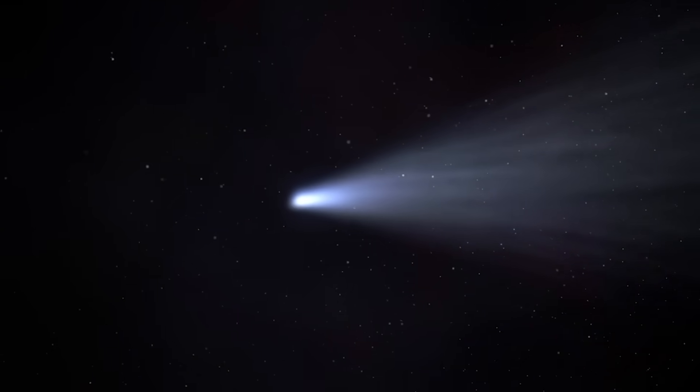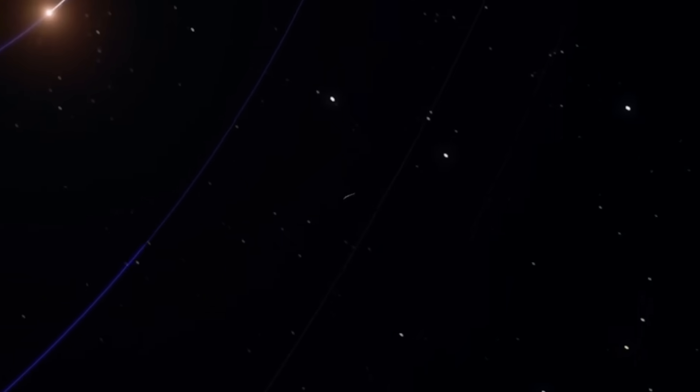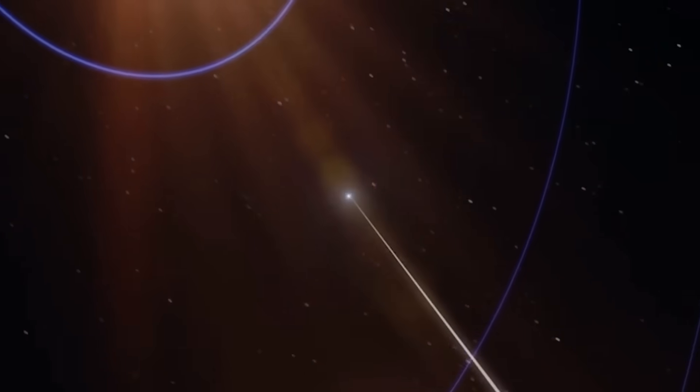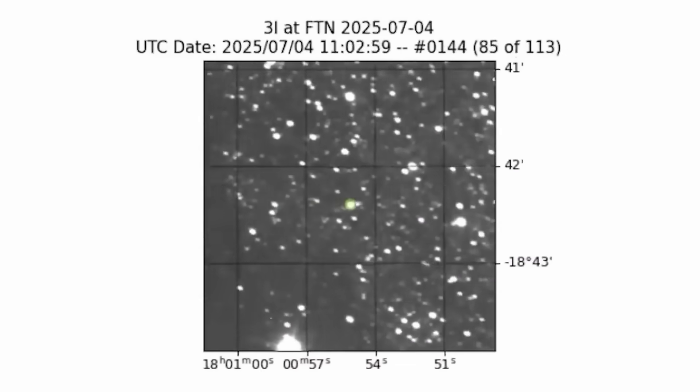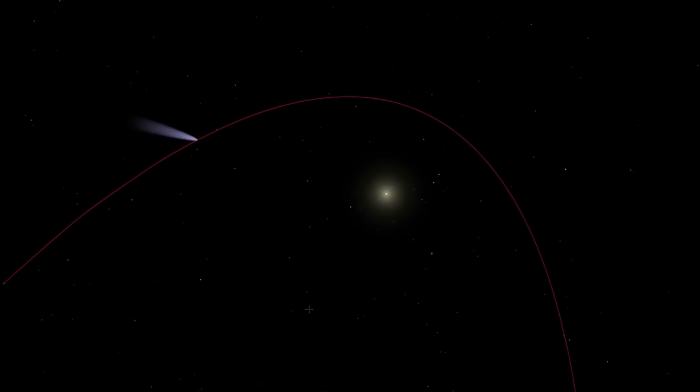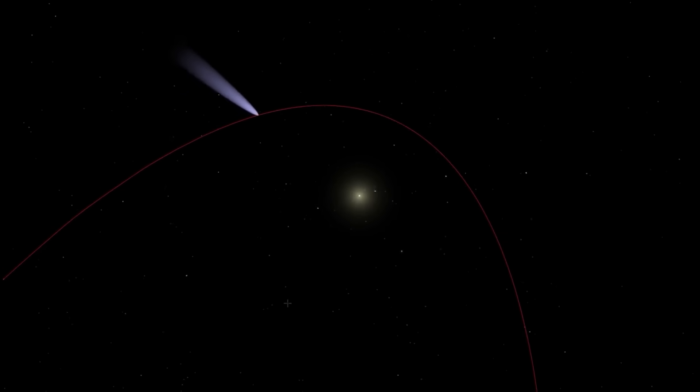For centuries, comets have been known as the sky's wanderers, icy relics from the outer reaches of our system that occasionally grace our skies with a bright glowing tail. They're predictable, natural, and fragile, melting and fragmenting as they near the sun. But 3i/ATLAS is not one of them. This object, streaking in from beyond our solar system, refuses to act like a comet at all.